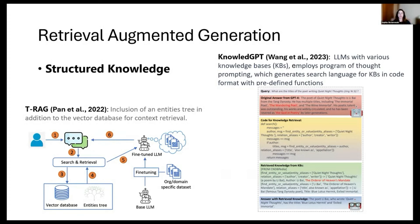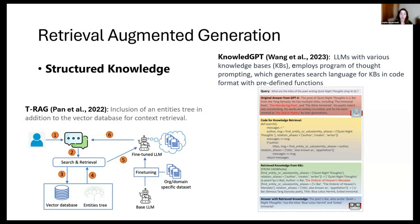I wanted to pull in some high-level graphics because they show other implementations of RAG using different LLMs. In some cases, they're using smaller fine-tuned LLMs as part of the retrieval process. KnowledgeGPT at the top was one of the highlighted applications, and all these papers have their own branded prompting techniques.